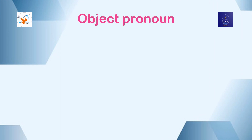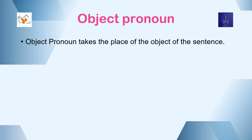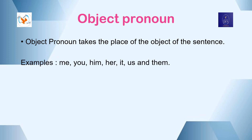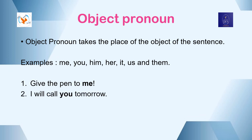The second type of personal pronoun is the object pronoun. An object pronoun takes the place of the object of the sentence. Examples: Give the pen to me. I will call you tomorrow. Mom sang a song for him. The key difference between subject and object pronouns is the effect they have in a sentence — a subject pronoun is doing an action, while an object pronoun is the one an action is happening to.